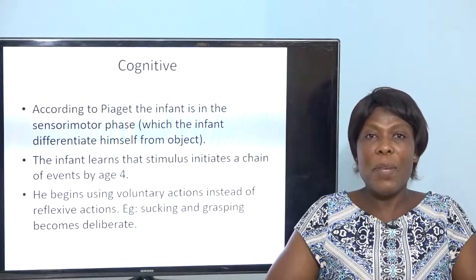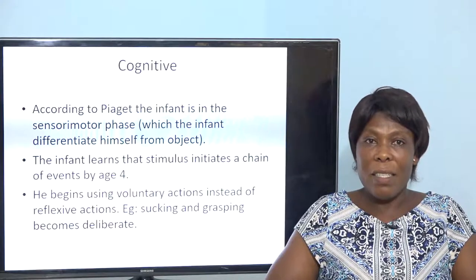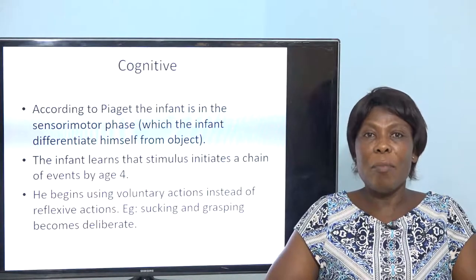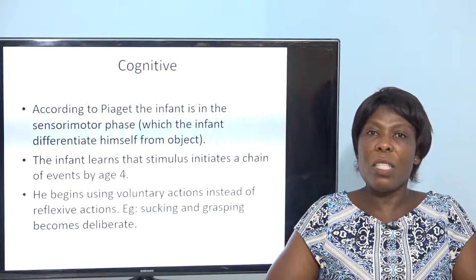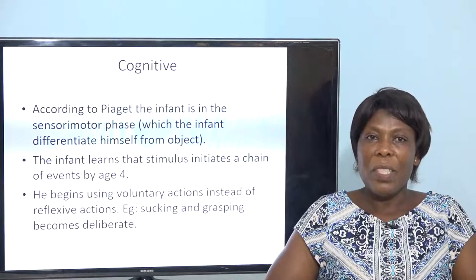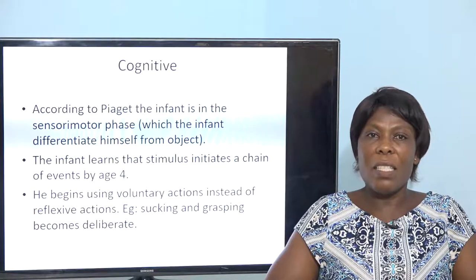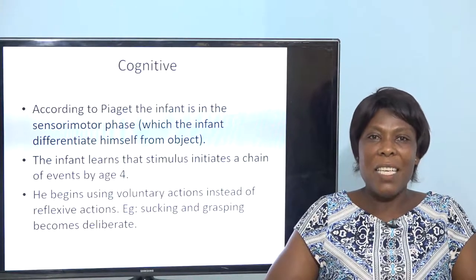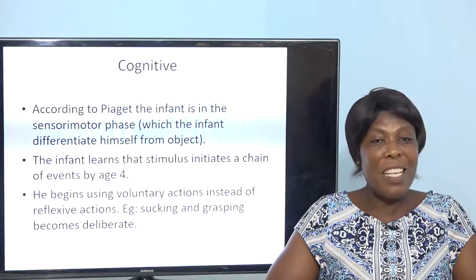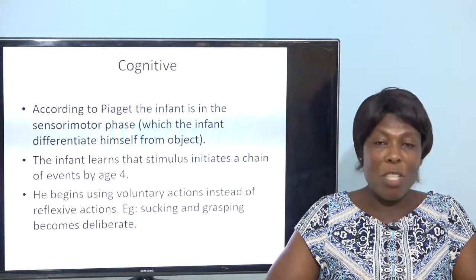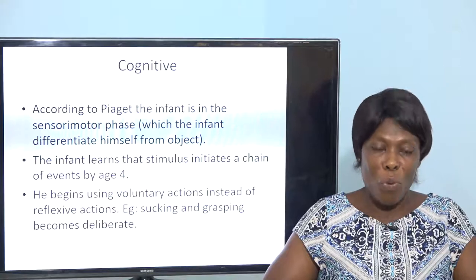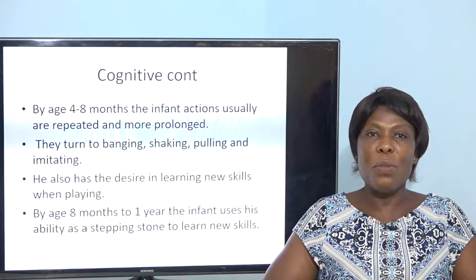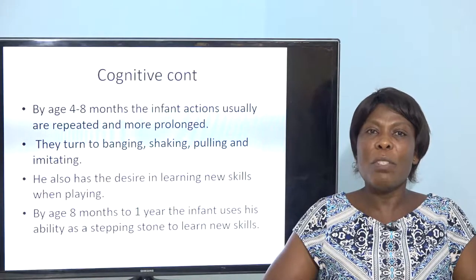For cognitive aspects, we use Piaget's developmental stage. The infant is in the sensorimotor phase, during which they are able to differentiate themselves from objects. The infant learns that a stimulus initiates a chain of events, and begins to show voluntary actions instead of reflexive actions — like the startle and gag becoming deliberate. By age four to eight months the infant's actions are usually repeated and more prolonged.